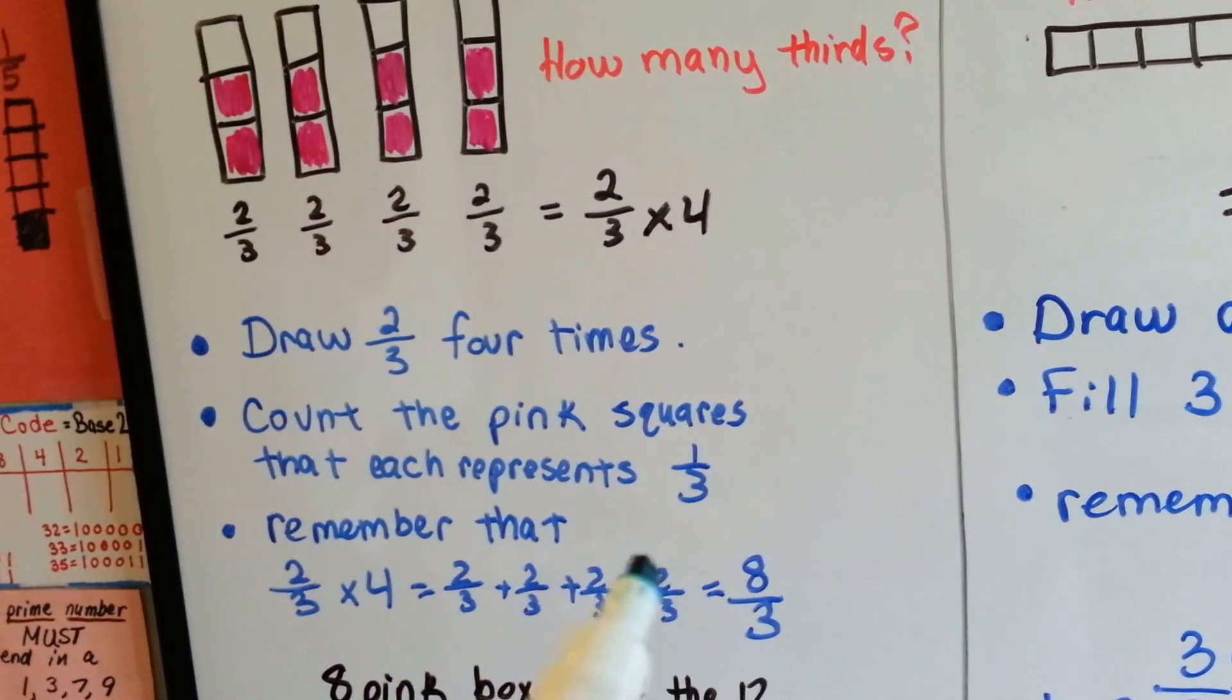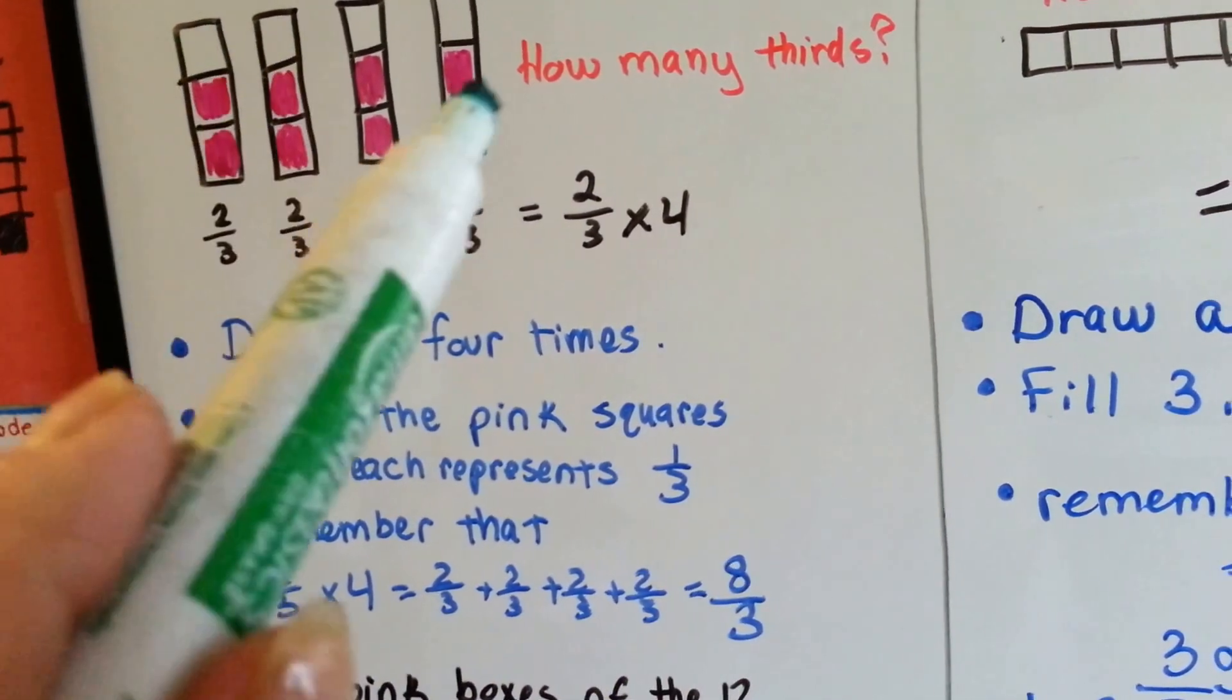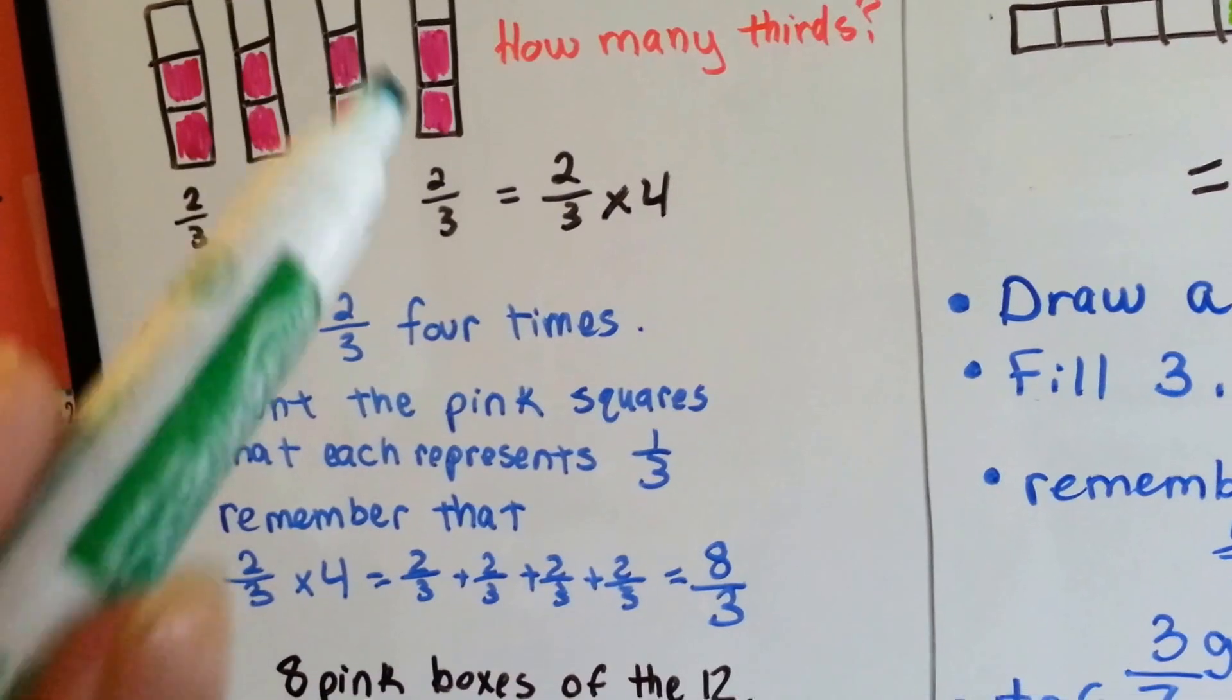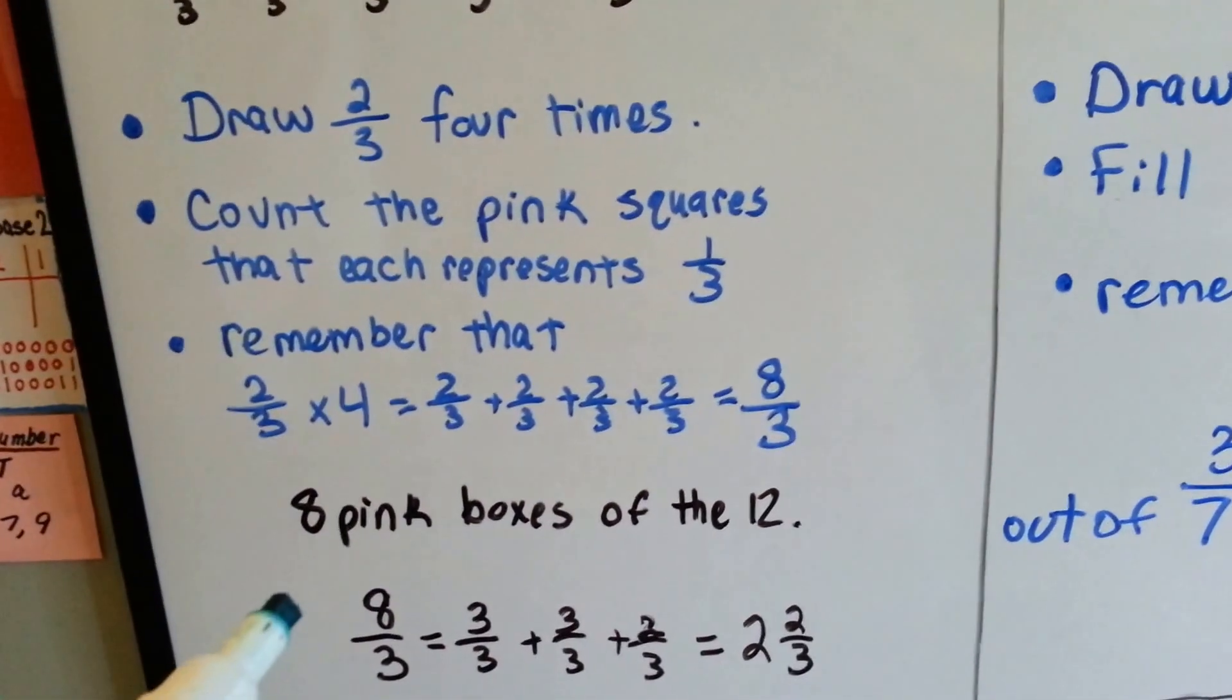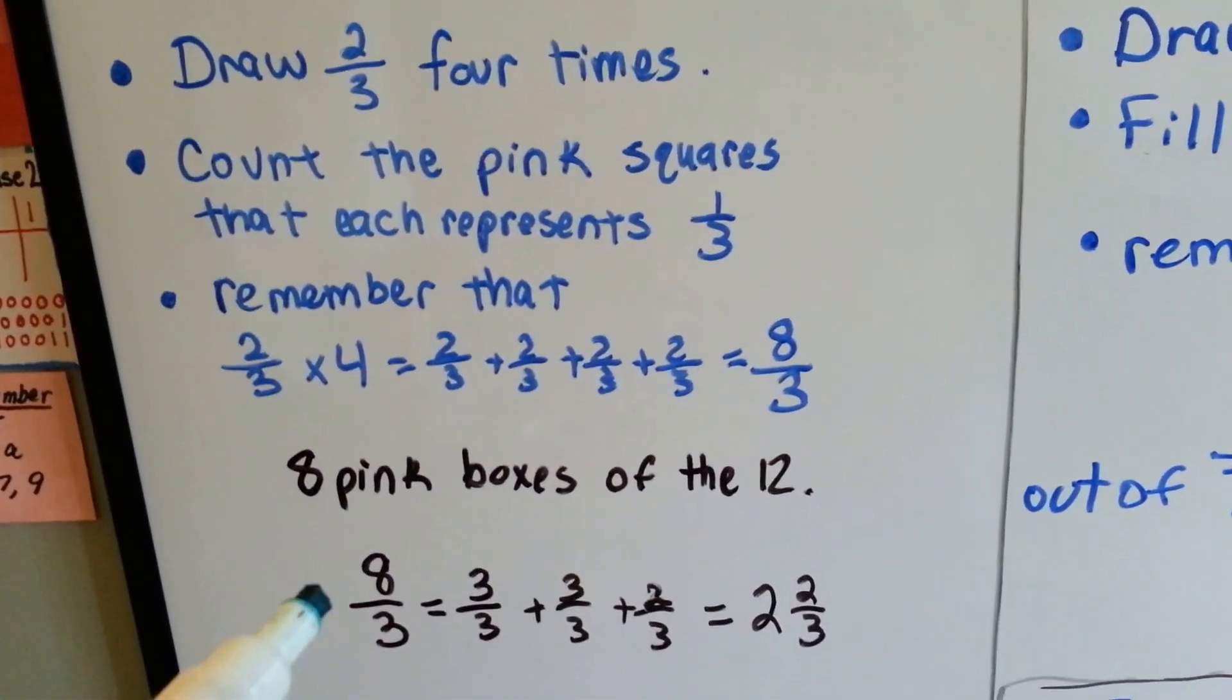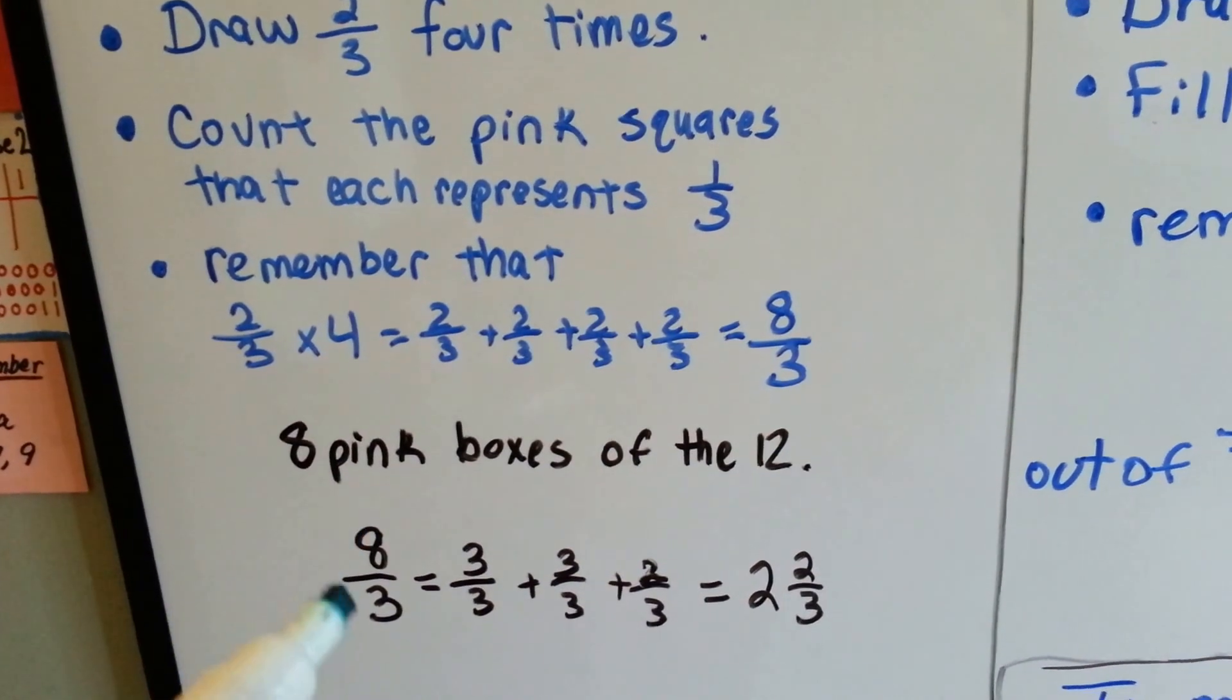If you added up the numerators, you'd get eight. And if you added up these boxes, you'd get eight. So eight pink boxes out of the twelve, so it's eight-thirds.